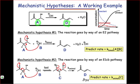In the first, hydroxide deprotonates, and at the same time, the leaving group leaves and a new double bond forms. This one-step reaction would have a reaction rate that corresponds to this equation in the yellow box here.